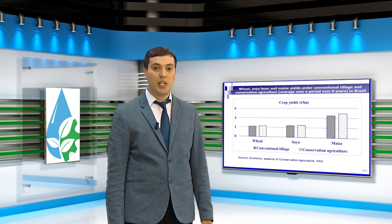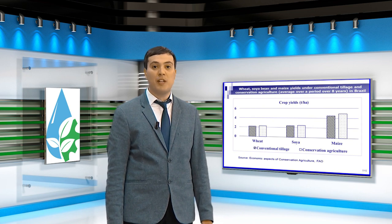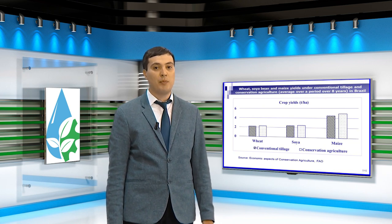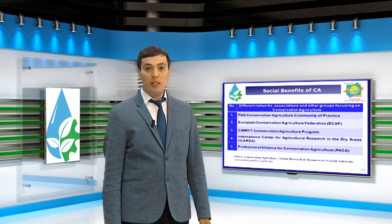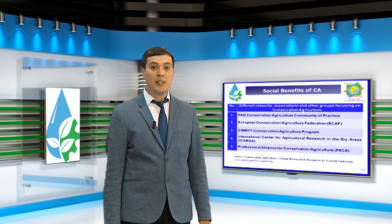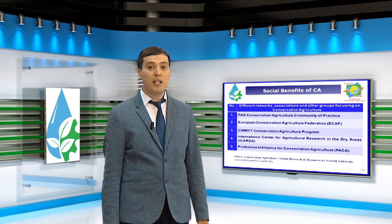Crop yields in conservation agriculture can be the same or higher compared to the conventional tillage system. However, there is also a possibility that yields can be lower at the beginning of implementation. With appropriate management of residue, pests, and weeds, conservation agriculture gives positive results for the long term. The large number of networks, associations, and groups concerning conservation agriculture shows a prospective future for developing this technology worldwide. Government policy, training of extension services agencies, and NGOs play an important role in adopting and disseminating it.